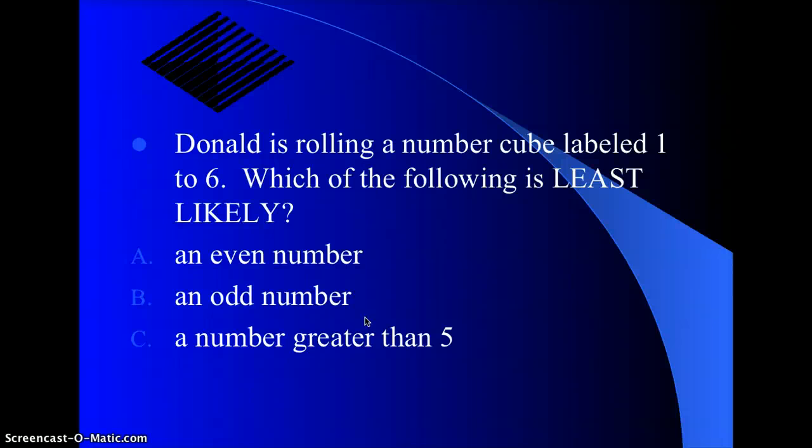So least likely chance of one through six. You have an even number where you have two, four, and six. That's three out of six, which is a half, equally likely. Odd would be one, three, and five, so that's also half. And then a number greater than five would just be six. So least likely to occur would be C, a number that's greater than five.